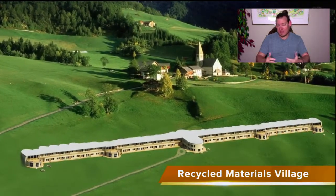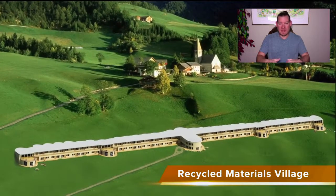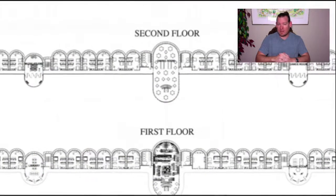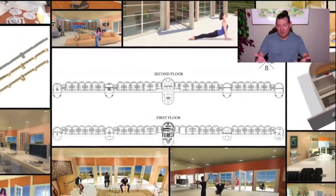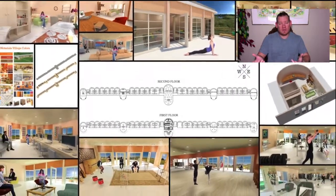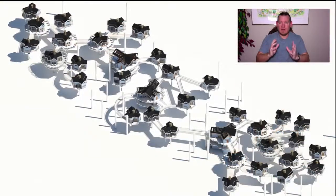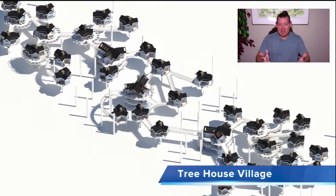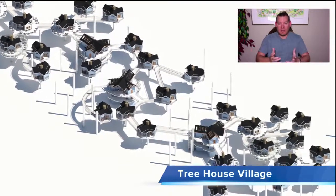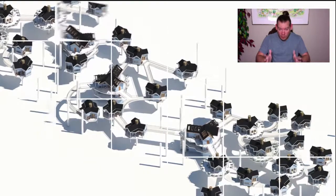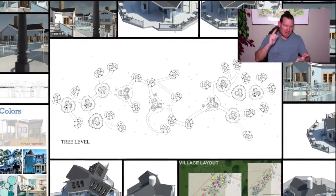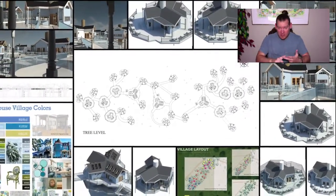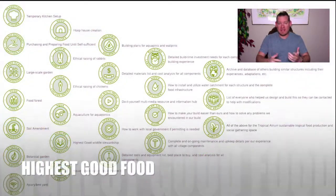As we build the seven different sustainable village models and expand beyond that, we'll have the ability to host thousands of people at a time and show them exactly what we're doing. The revenue generated through that process will allow us to continue to expand indefinitely, help other organizations doing similar things around the world, and create and support a global cooperative and collaborative of others helping to design this path to global sustainability — bringing people together to work in cooperation as a global cooperative, creating the planet we all know is possible.